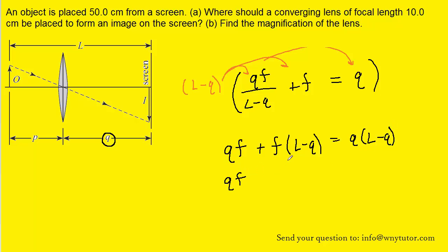We'll have to distribute the F into the parentheses that's going to give us FL minus FQ. And then we'll distribute the Q into the parentheses to give us QL minus Q squared. Now remember we're trying to solve for Q. That's our variable. And you can tell that we have a quadratic equation forming because we have Q squared. And to solve a quadratic equation we have to move all of the terms over to one side of the equation.